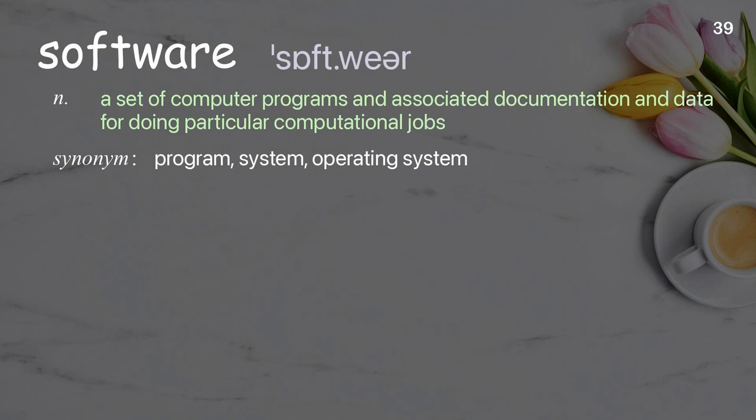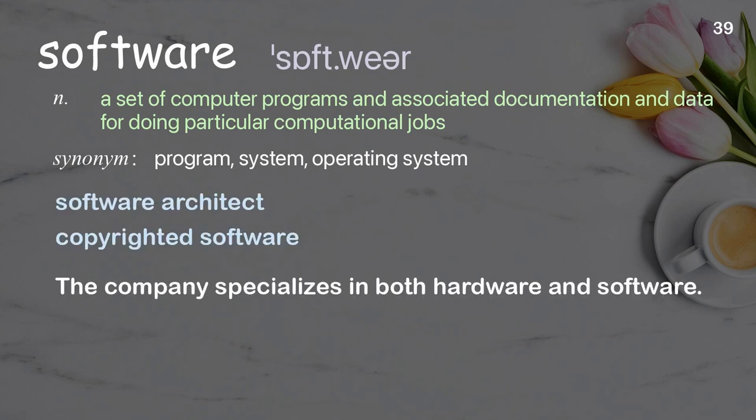Software: A set of computer programs and associated documentation and data for doing particular computational jobs. Examples: Software architect. Copyrighted software. The company specializes in both hardware and software.